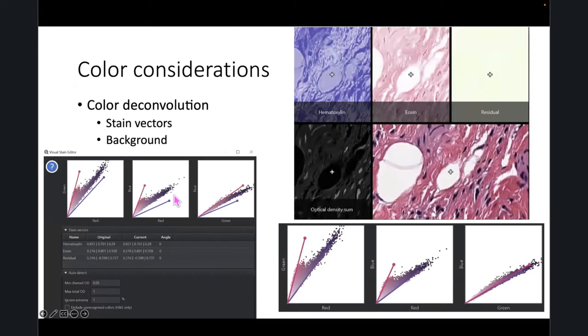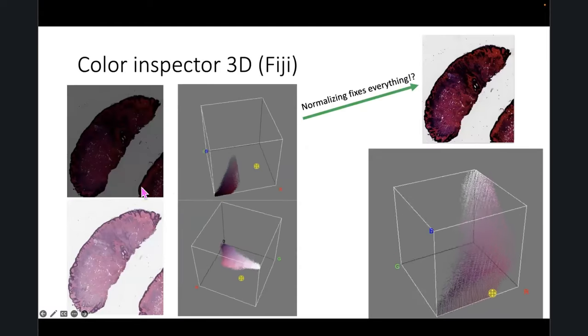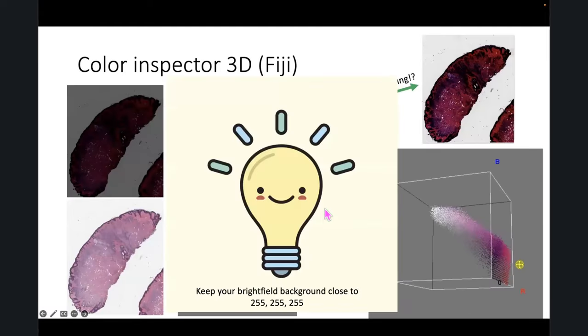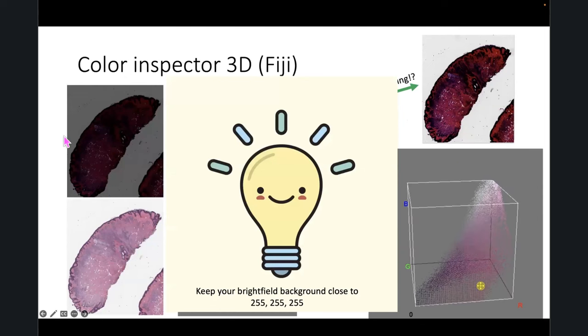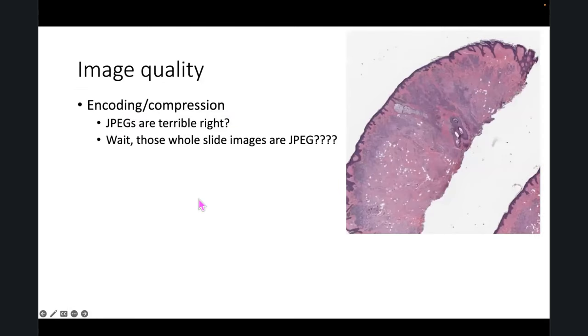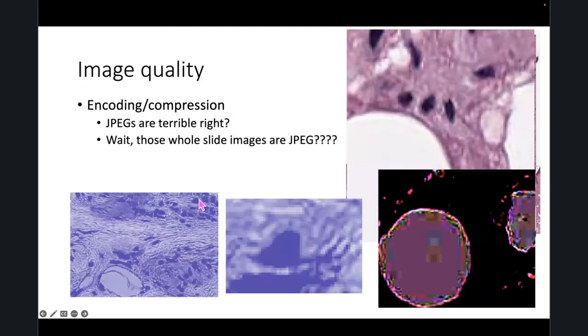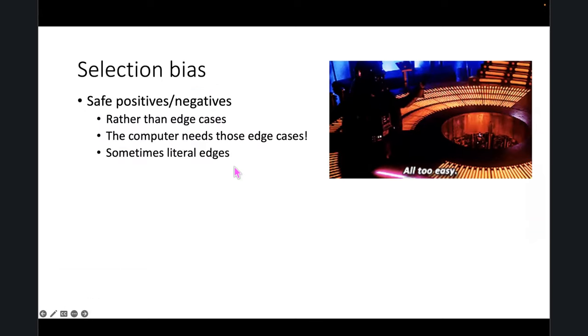I'm just going to skip talking about color, even though I had some cool GIFs. Make sure you keep all your images super bright. JPEG encoding example and bias — selection bias.